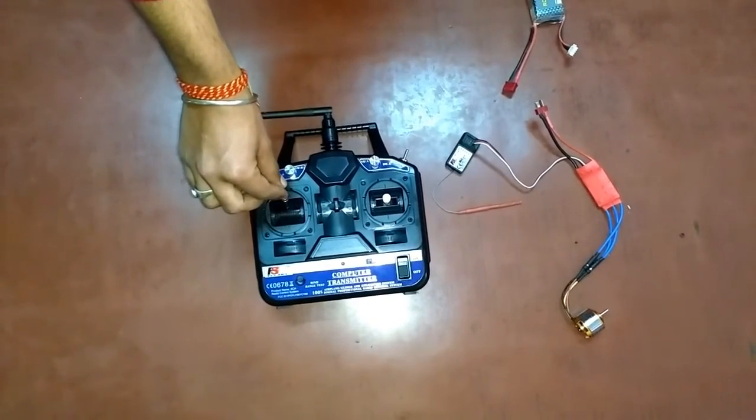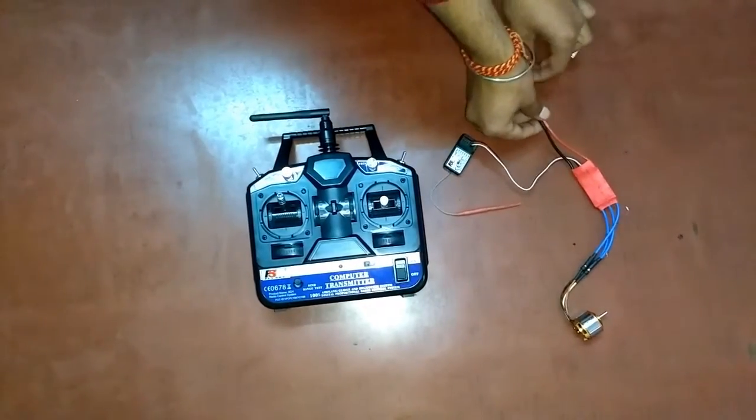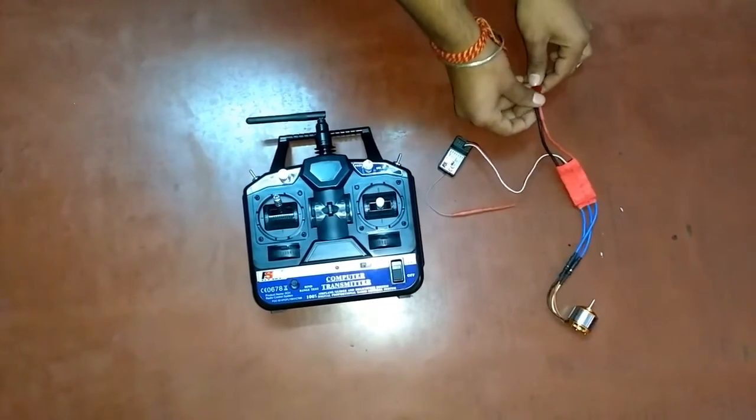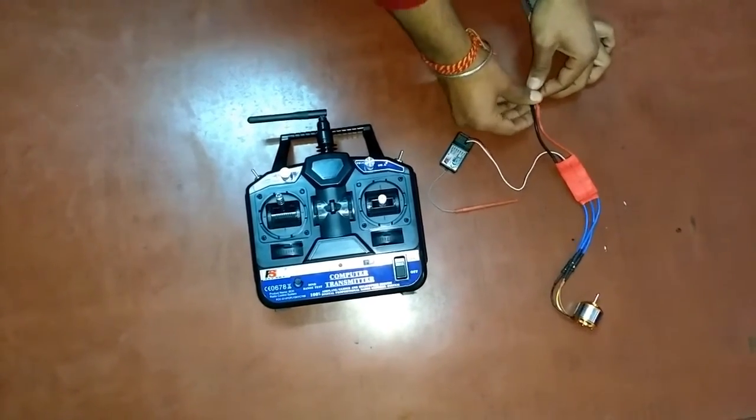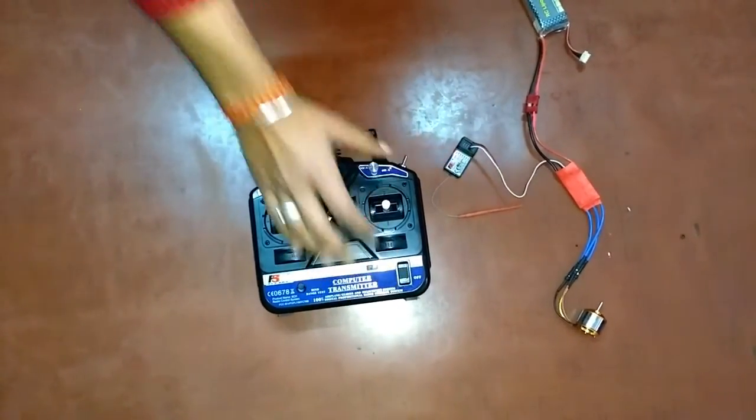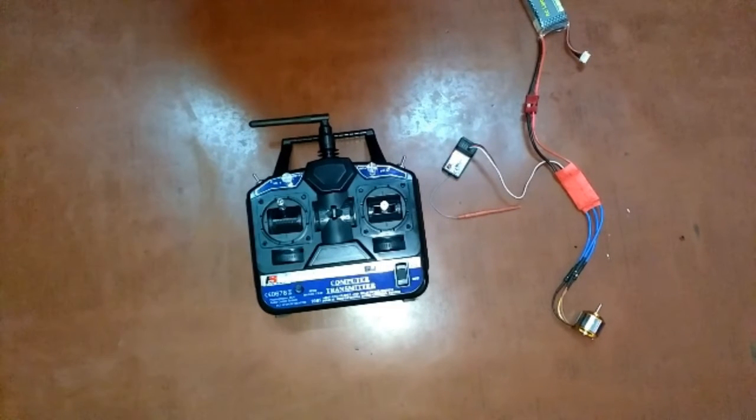Now after this, place your throttle at highest point at the maximum throttle value, and now connect your lipo battery to the electronic speed controllers. And then you will hear one musical beep from motor and then a single beep from your motor. And now at this point, your ESC is aware of the highest throttle point and is waiting to recognize the lowest throttle point.